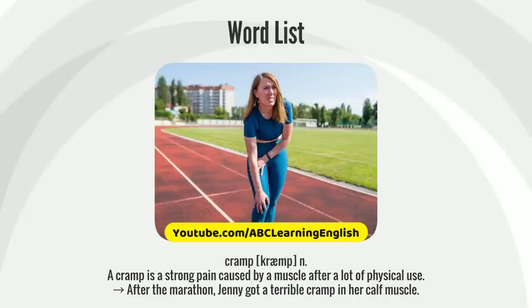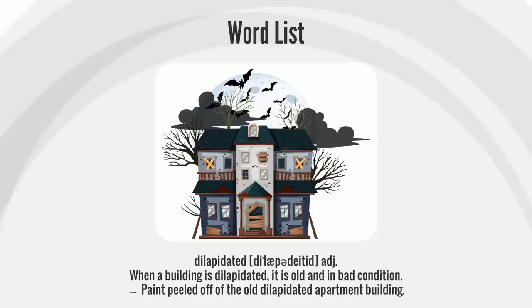A cramp is a strong pain caused by a muscle after a lot of physical use. After the marathon, Jenny got a terrible cramp in her calf muscle.